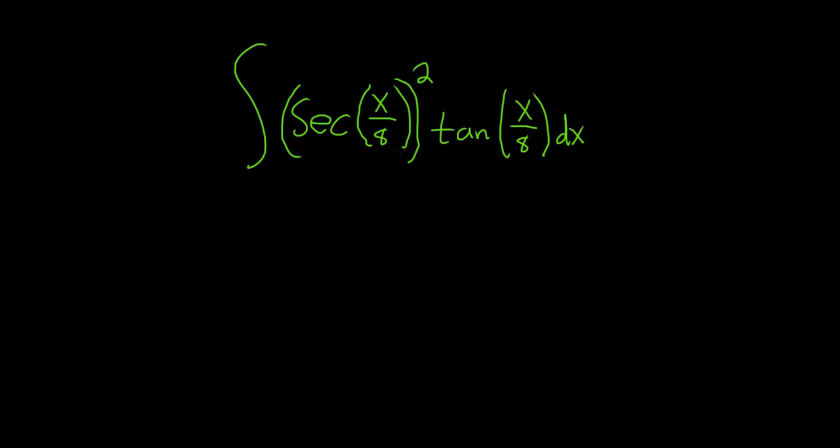If you have an even power of secant, you can save a copy of secant squared. And if you have an odd power of tangent, you can save a copy of secant tangent. In this problem we have both. We have an even power of secant, and we have an odd power of tangent to the first power.